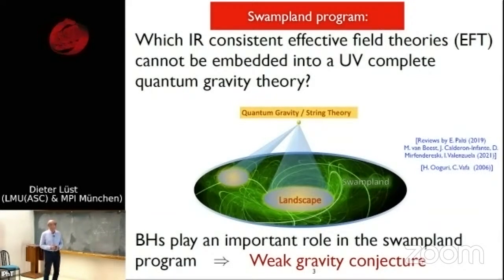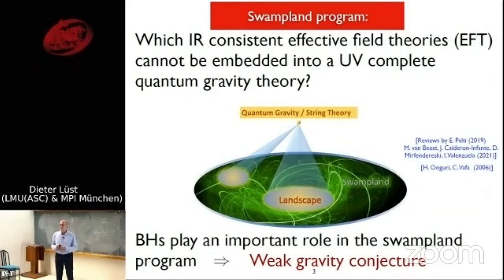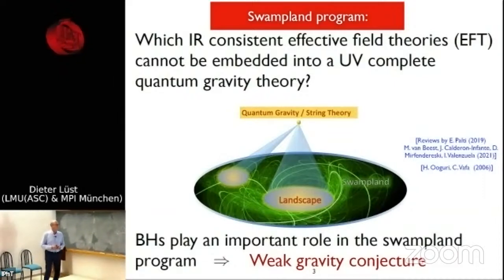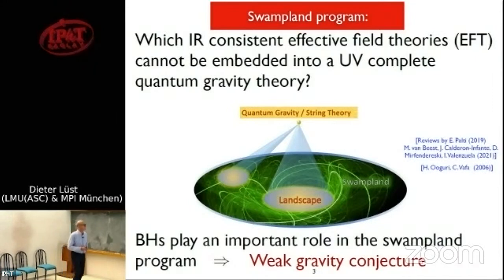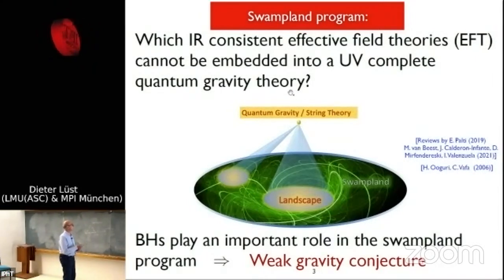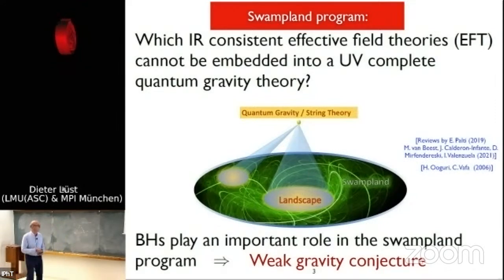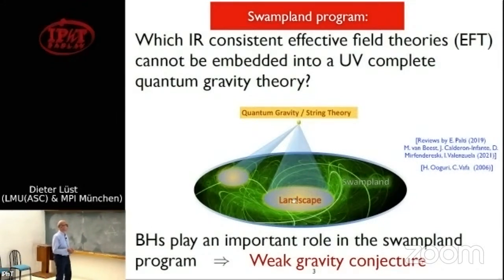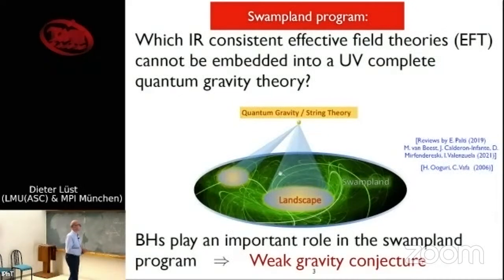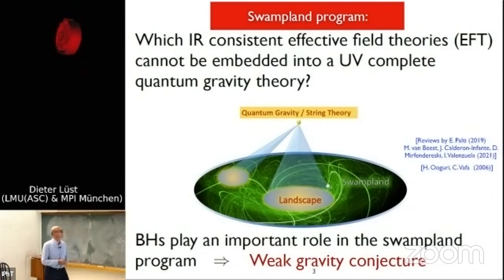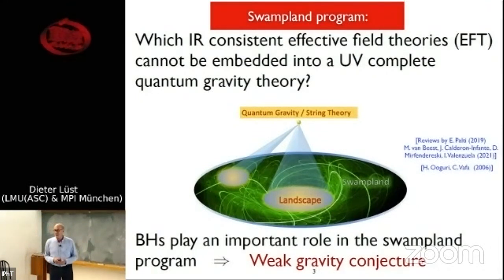What is the swampland? In short, it addresses the question of which infrared-consistent effective field theories cannot be embedded into a UV-complete quantum gravity theory. There are many effective field theories which do not allow for an uplift into quantum gravity or string theory — you are then said to be in the swampland. Here is a picture by Cumrun Vafa: in the UV there is quantum gravity or strings, and going down in energy via compactification you obtain a vast landscape of string compactifications, surrounded by an even more vast theory space that cannot be embedded in string theory — that is the swampland.